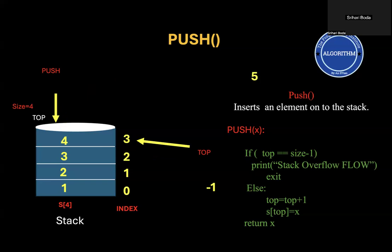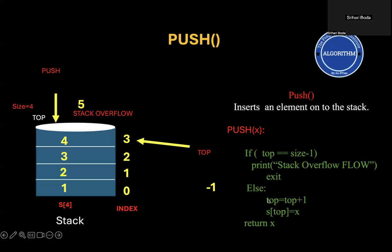If you want to insert one more element, that is not possible because there is no vacant cell — we should avoid that by throwing a stack overflow error. In the algorithm, when top equals size minus 1, meaning top is pointing to the last index and all cells are already occupied, we say the stack is overflow. In all other cases, we increment the top value and into that new top position we insert the new element.